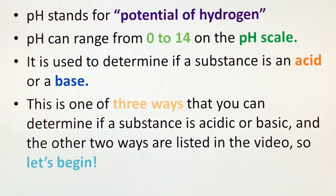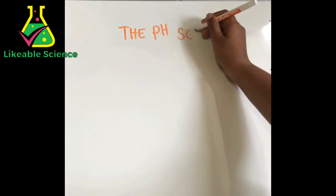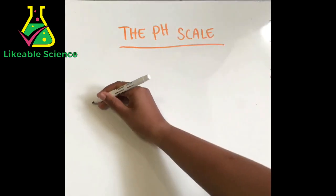So let's begin! First off, what's the pH scale? Well, it helps to determine whether a substance is an acid or a base and how acidic or basic it is.